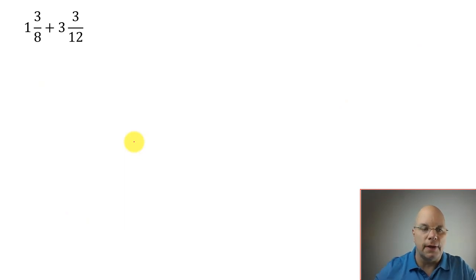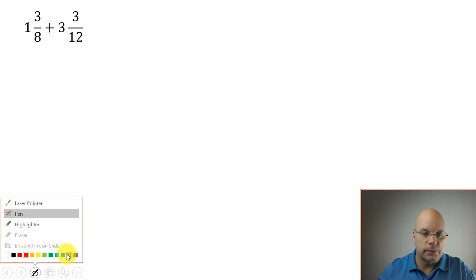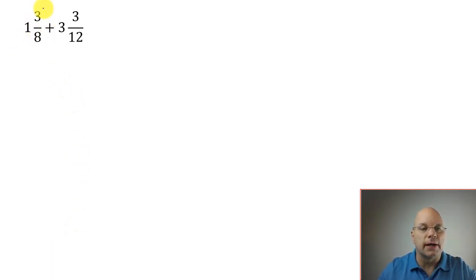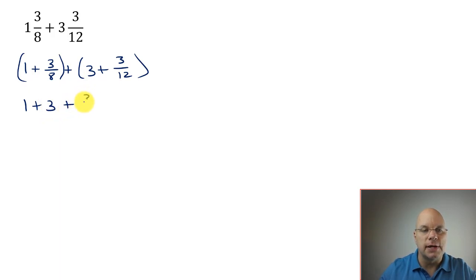I want to also do one with a mixed number although it's no more difficult than what we did. We just need to recognize that 1 and 3 eighths is 1 and 3 eighths. And 3 and 3 twelfths is 3 and 3 twelfths. Then we can associate. We can say 1 plus 3 plus 3 eighths plus 3 twelfths. And the reason we do that is because we wanted like terms. I have like terms here. I have wholes. I have one whole and three wholes. I can combine like terms and that's four wholes.